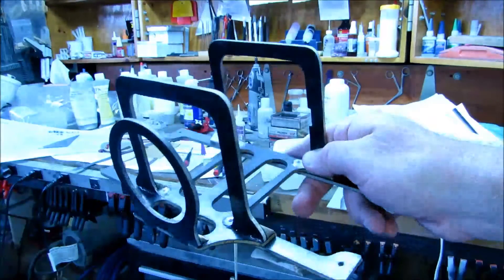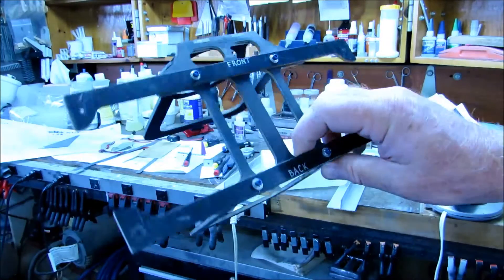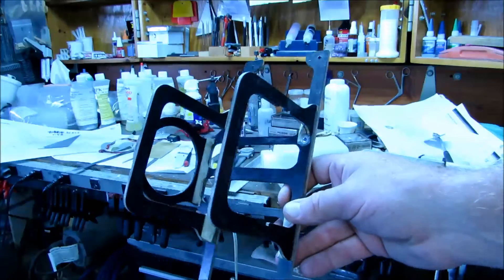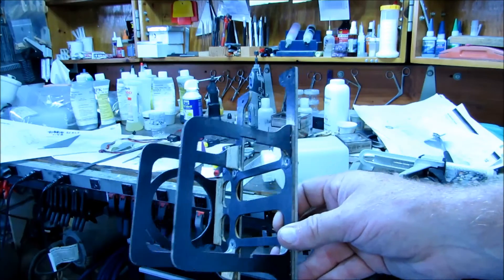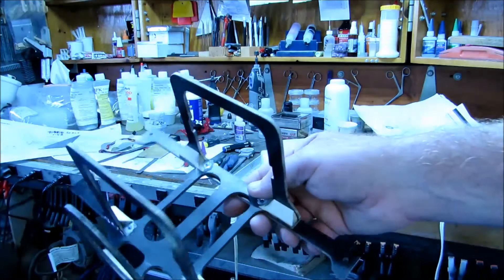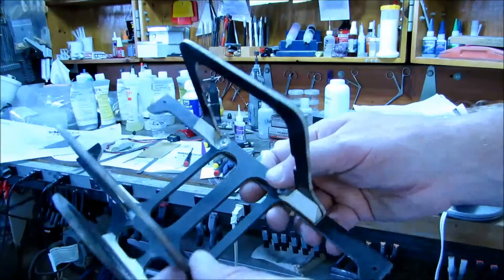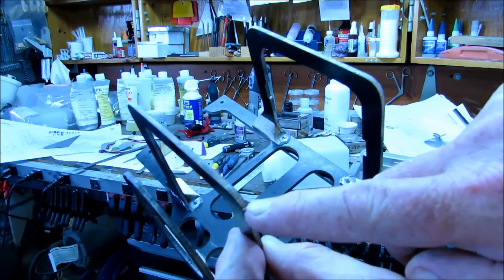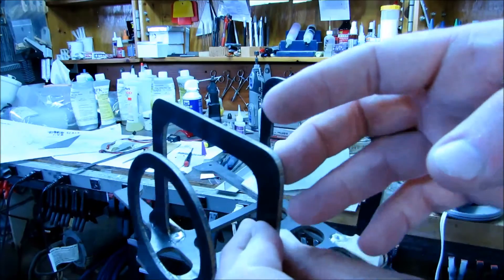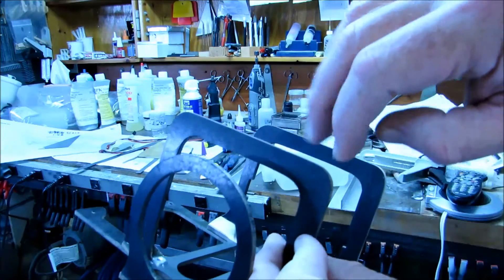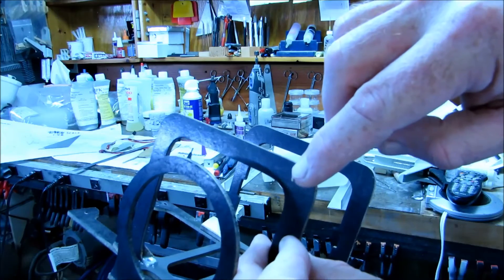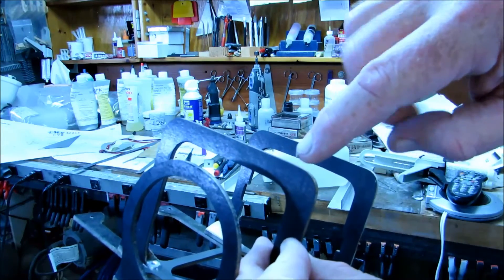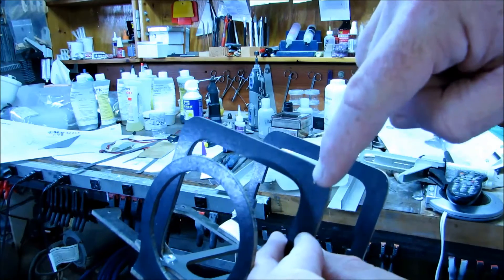This is all made out of some composites that I made up. I made these plates that were one foot by two foot long and they have eighth inch end grain balsa separating the carbon. Each side has one layer of unidirectional carbon running this way and another layer of unidirectional carbon running this way.